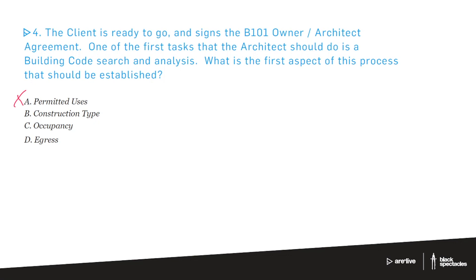A quick aside: most of these terms are national terms used across the board. Every once in a while a zoning code won't use the specific term 'permitted uses,' but the vast majority do, to the point that NCARB actually uses that term. Similarly, FAR — floor area ratio — is used in most places, though some use slightly different terms. The exam uses FAR, so the terms we discuss here are all likely to appear on the exam.